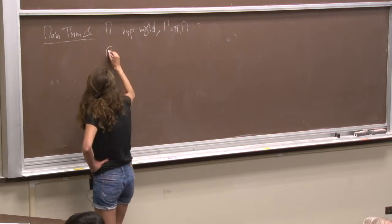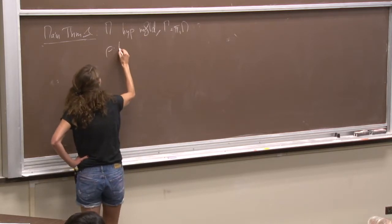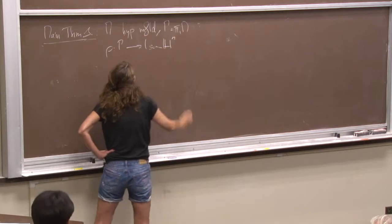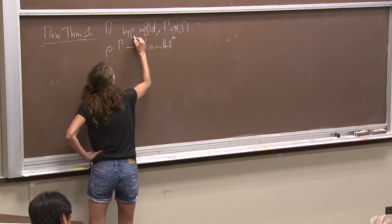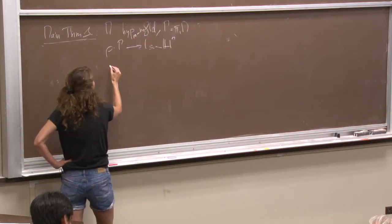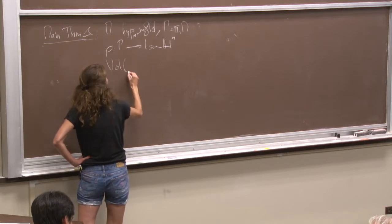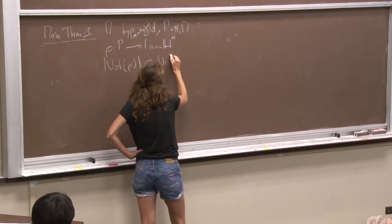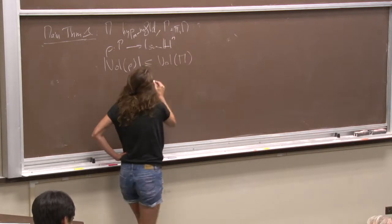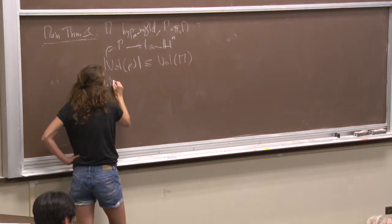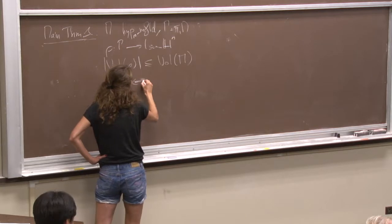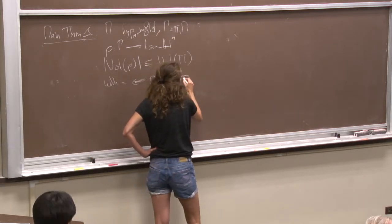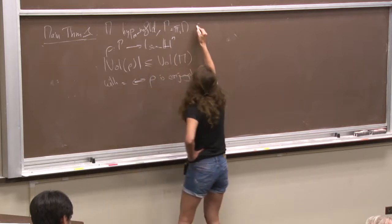For any representation from gamma into the isometries of hyperbolic N-space, we have this notion of volume of a representation. It's smaller or equal than the volume of the manifold, with equality if and only if rho is conjugated to the lattice embedding.